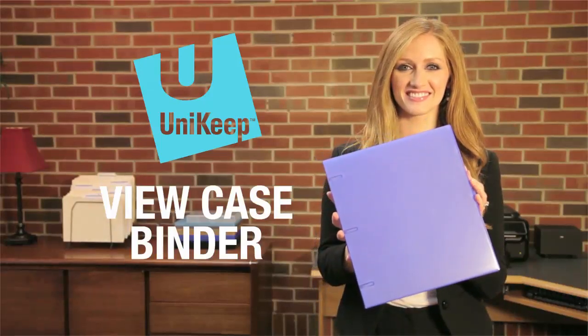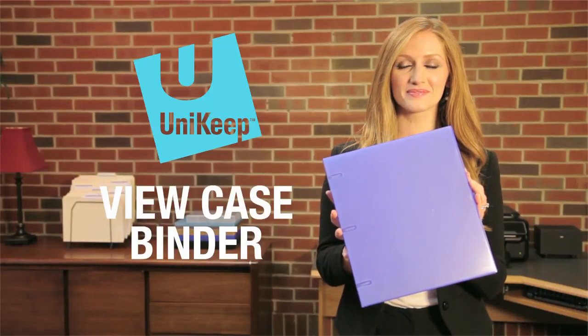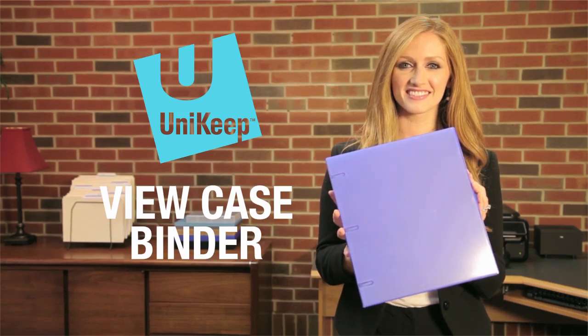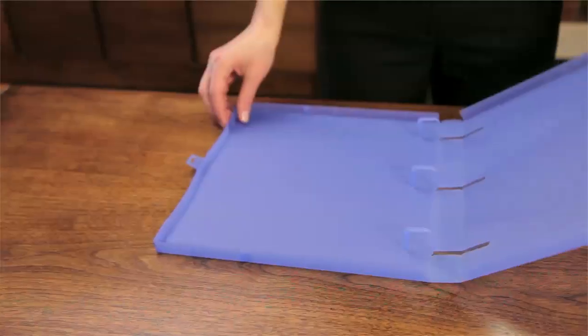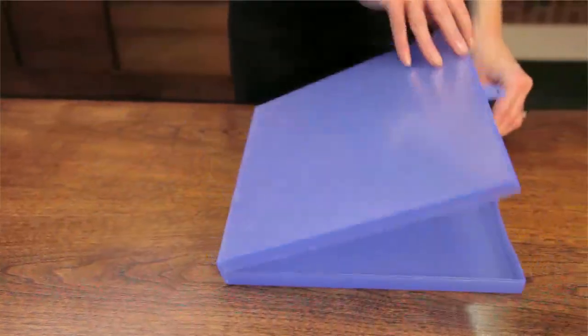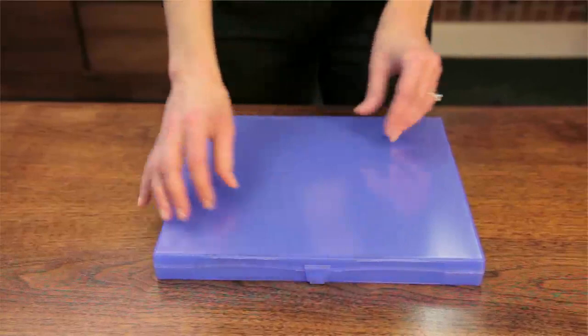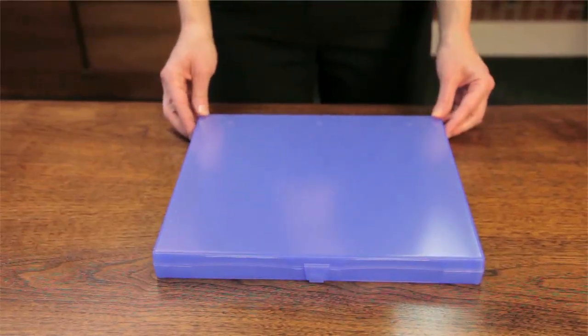The UniKeep ViewCase binder is an excellent way to keep your most important documents safe and organized. Unlike three ring vinyl binders, patented UniKeep ViewCase binders are made from durable, 100% recyclable polypropylene and are fully enclosed to protect their contents.